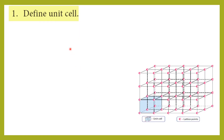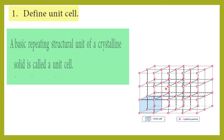First question: define unit cell. Unit cell is the simplest unit in three dimensions that repeats to form a crystal. The basic repeating structural unit of a crystalline solid is called a unit cell.